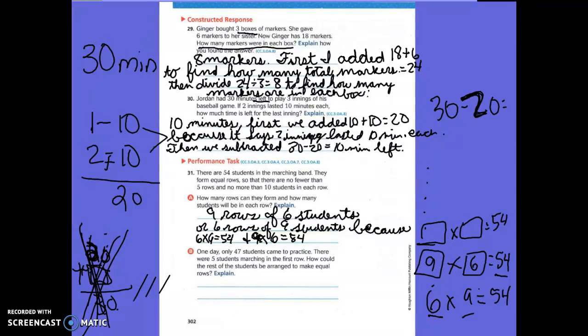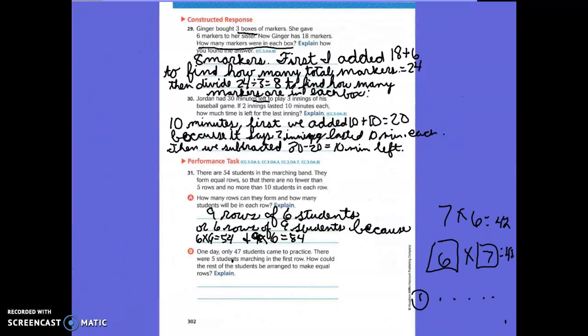One day, only 47 students came to practice. There were 5 students marching in the first row. So how could the rest of the students be arranged to make equal rows? Explain. We're still using this 54 students up here. Oh no, we're not using 54 students anymore because it says only 47 students came. So we have a different number at the top for our rows and how many can come in each row.